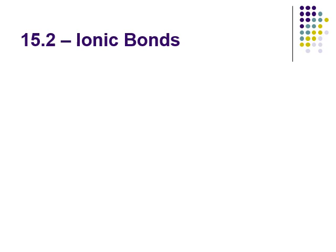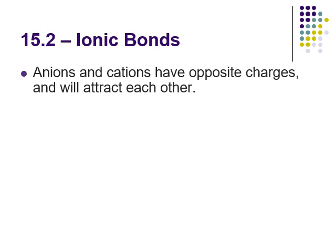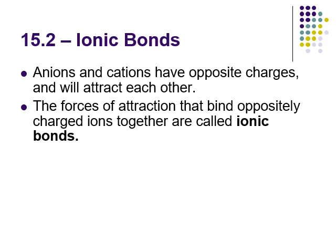Now we're looking at section 15.2 - what's causing and going on with ionic bonds. For this unit we want to focus on what each type of bond is, how it forms, and what it forms between. When we talk ionic bonds, it all comes down to anions and cations. Anions have a negative charge, cations have a positive charge. Because one is positive and one is negative, they attract each other - opposites attract.